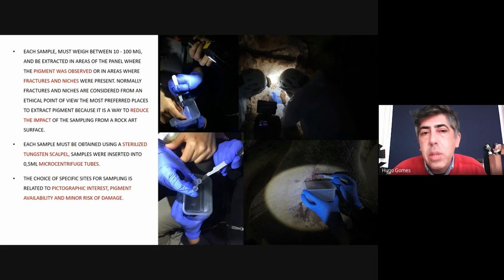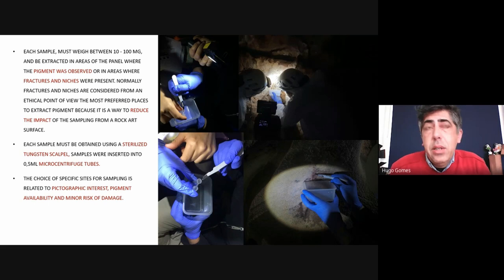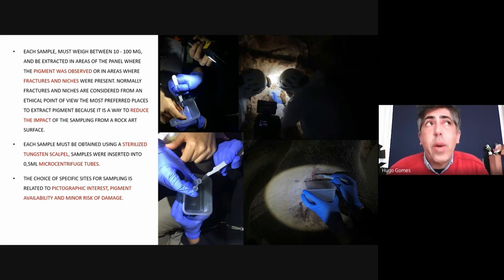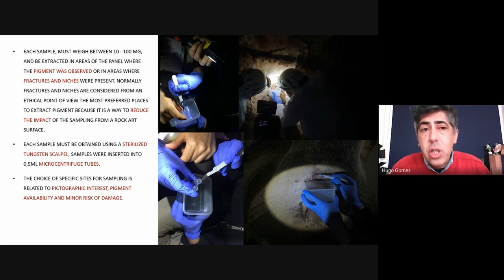In general, each sample must weigh between 10 and 100 milligrams. This is related to the evolution of laboratory techniques — a few years ago they needed a huge quantity of pigment, and the same was true for dating. Nowadays with improved technology we can work with very tiny samples and obtain many results. Of course when using diverse apparatus — Raman, FTIR, SEM, and absolute dating — we need as large a sample as possible while remembering not to damage the painting.